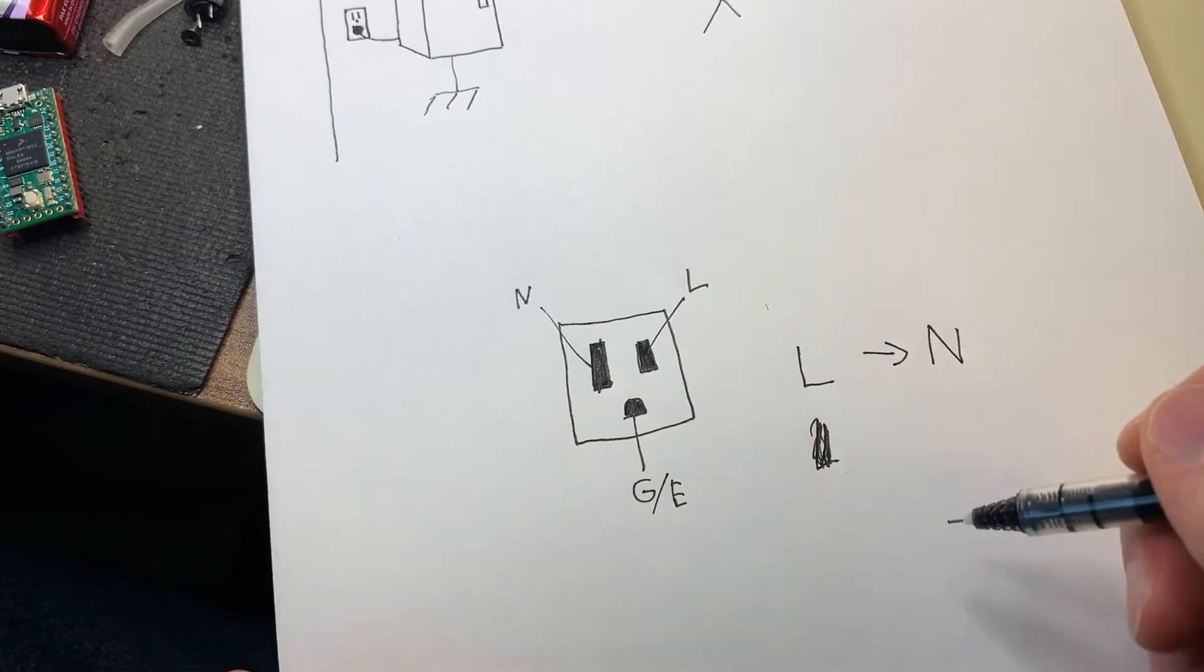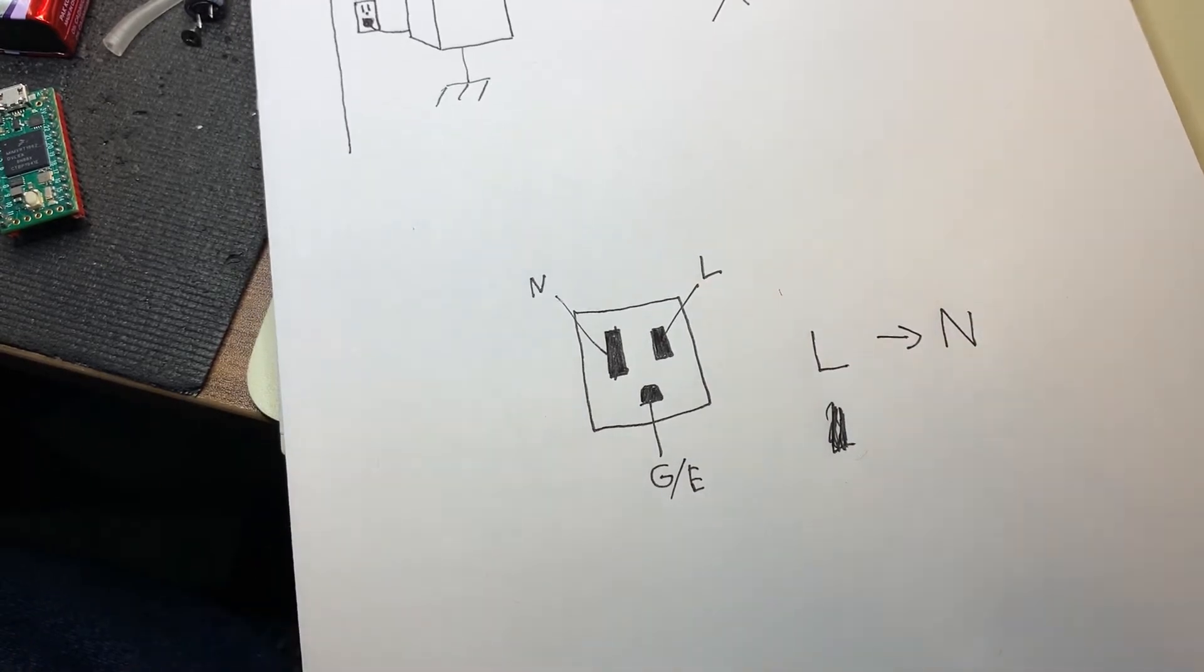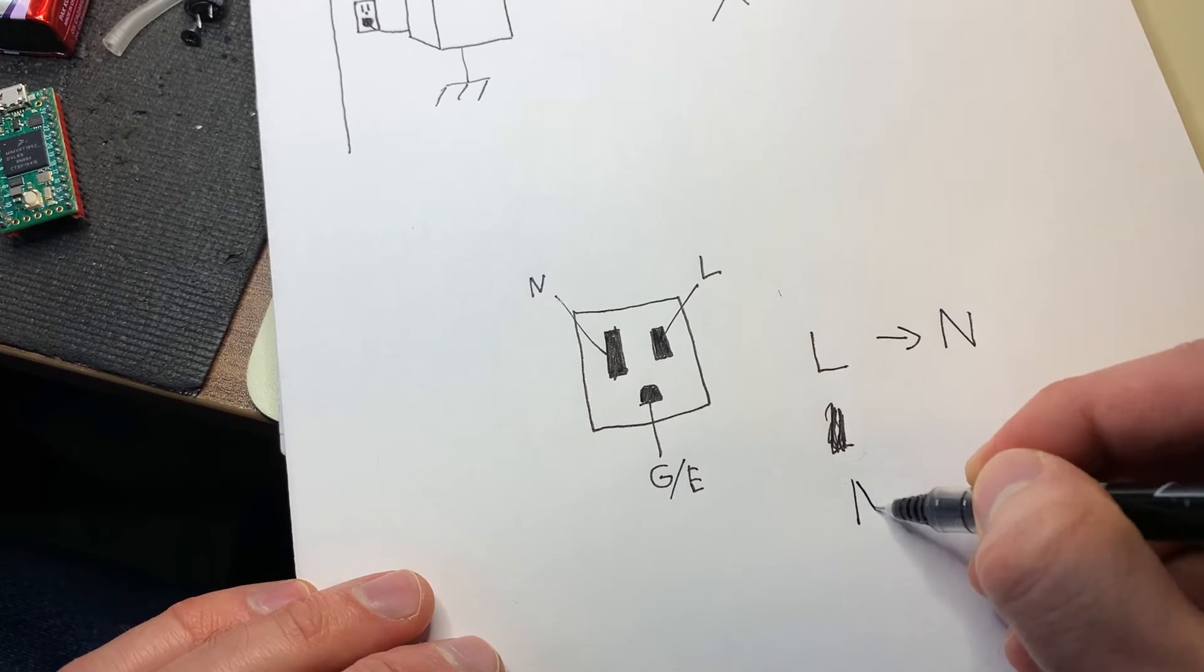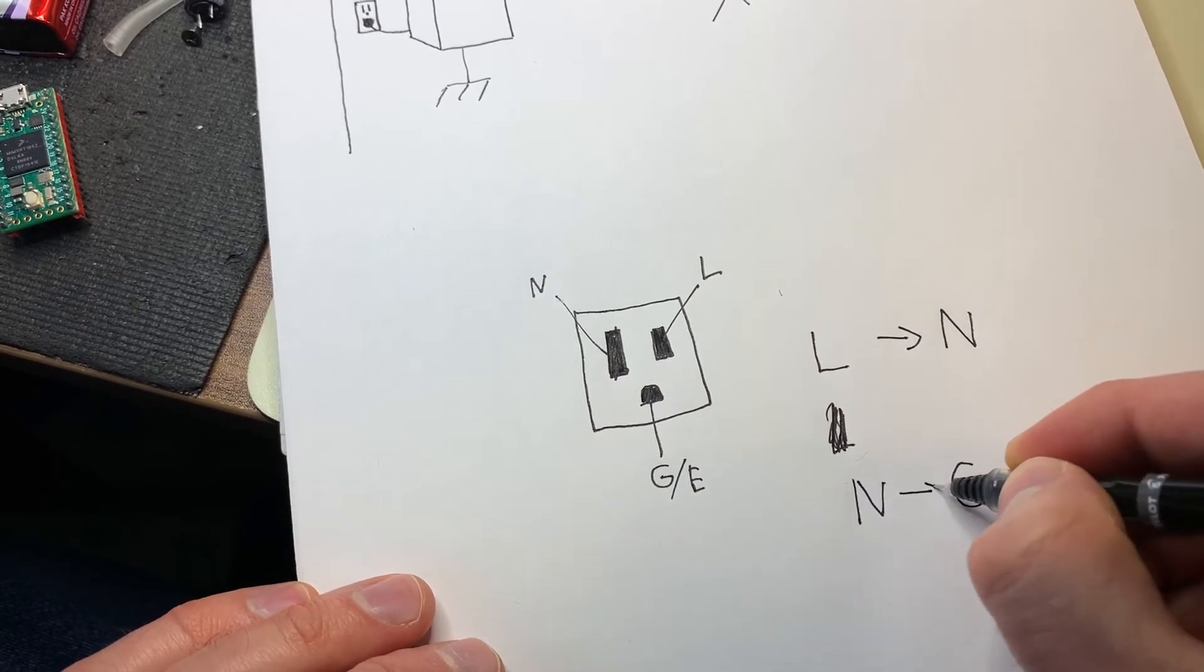But an important thing to keep in mind in virtually every electrical setup is that the neutral and the ground are directly connected to each other.